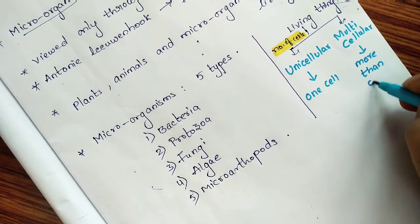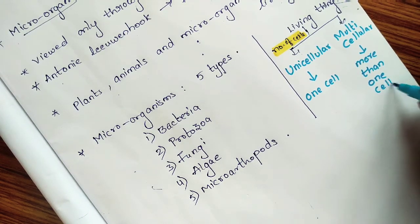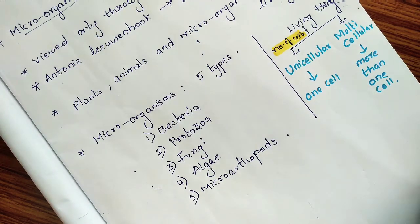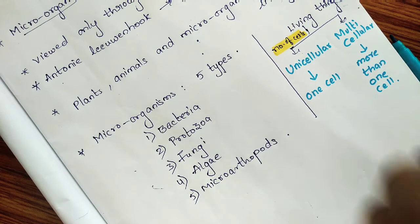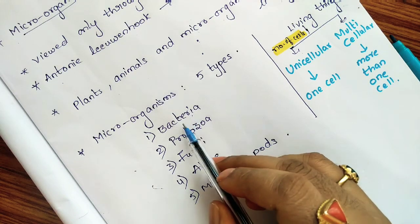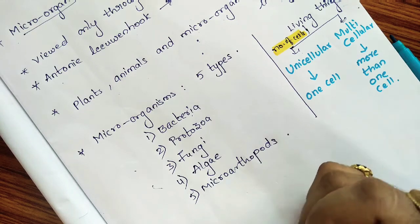Like two, three, hundreds, or thousands of cells can be observed in multicellular organisms. Even in these microorganisms, some are multicellular and some are unicellular.